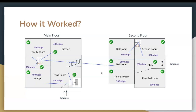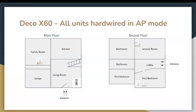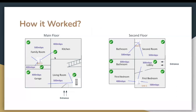Beyond that setup, there was one more configuration I implemented: all units hardwired but in access point mode instead of router mode. In this setup, the Rogers modem is no longer in bridge mode — it works as an independent unit. Instead of connecting Unit 1 directly to the Rogers modem, I sent the cable from the Rogers modem down to the switch in the basement, then carried one wire back up to Unit 1 on the second floor. Unit 2 was placed here and Unit 3 here, with the Decos spread across different corners of the house to minimize interference between them.